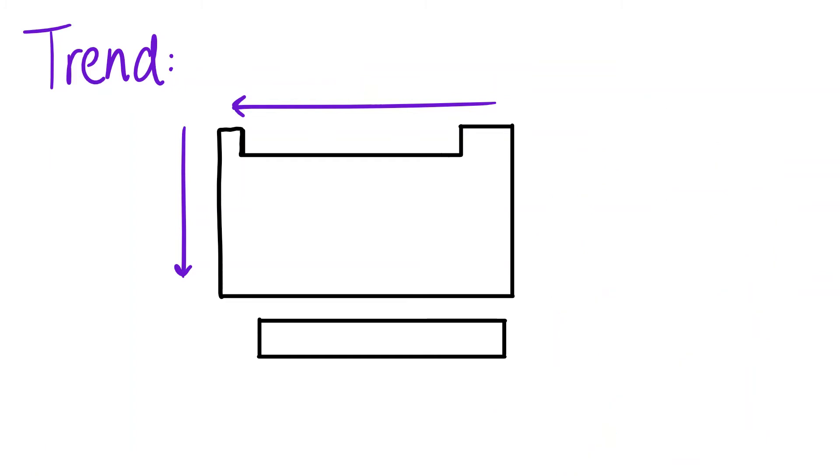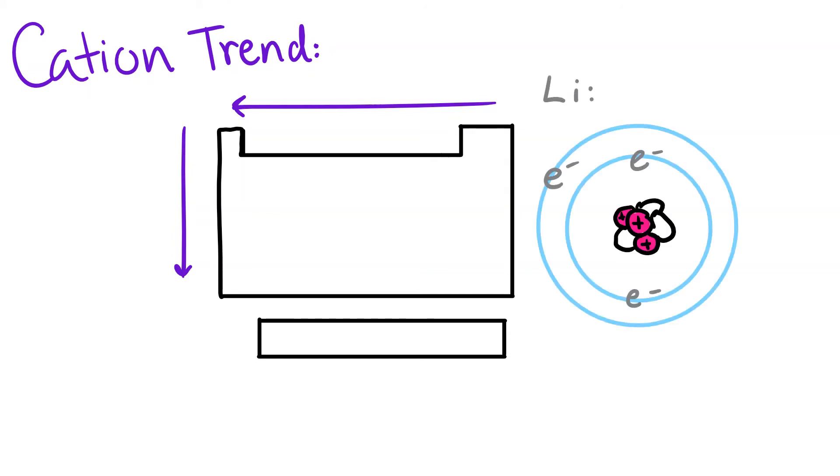Ionic radius is pretty similar, but instead of group or period trends, it follows cation and anion trends. When positive cations form, they lose electrons and often energy levels too, like in this lithium ion.